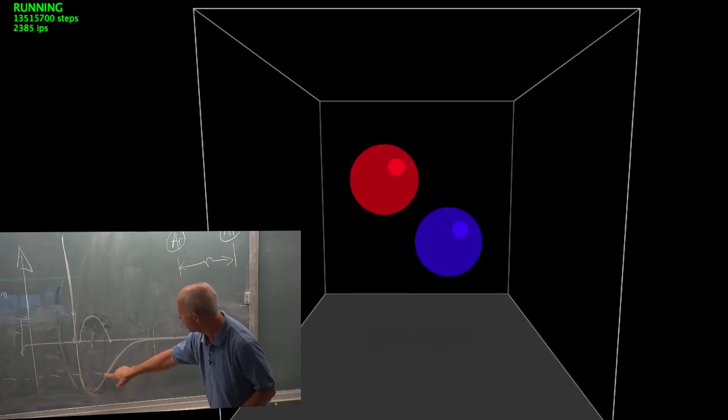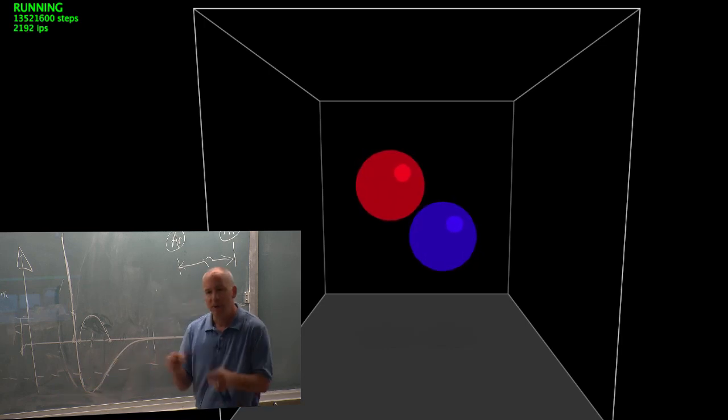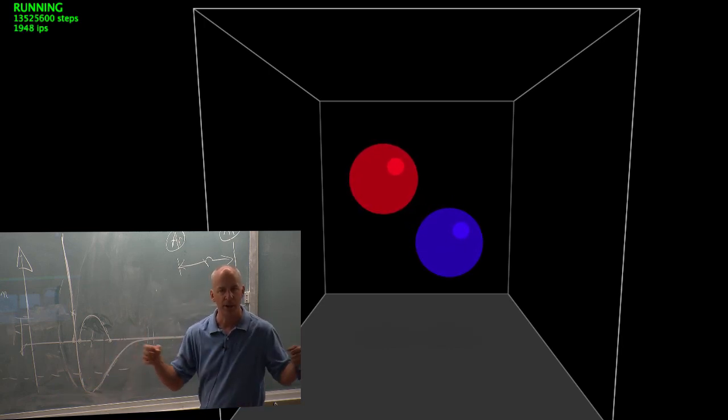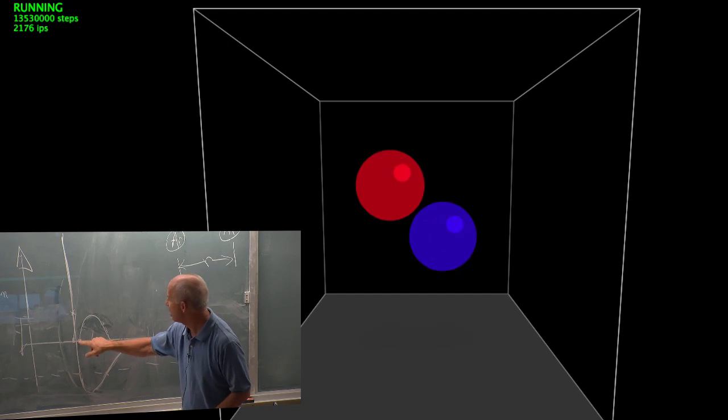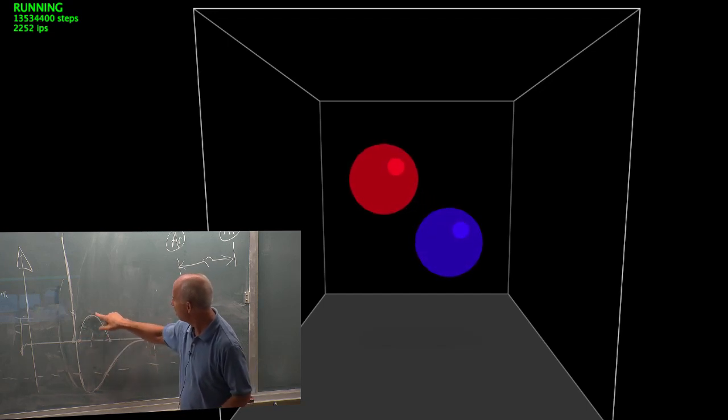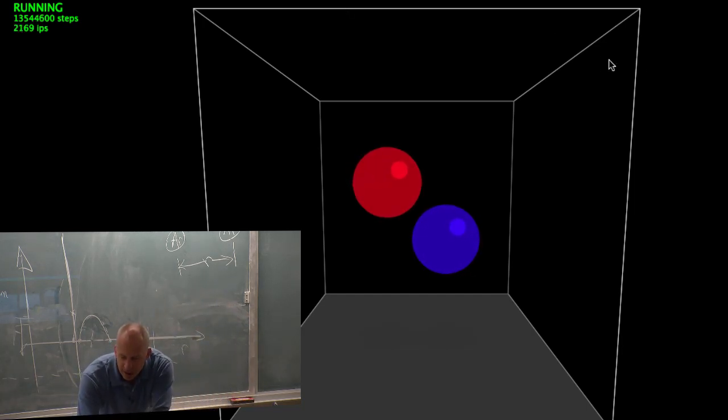The potential energy is going down, up, down, up as they go apart, closer together, apart, closer together. The kinetic energy, up, down, up, down. Kinetic energy is biggest around the center.